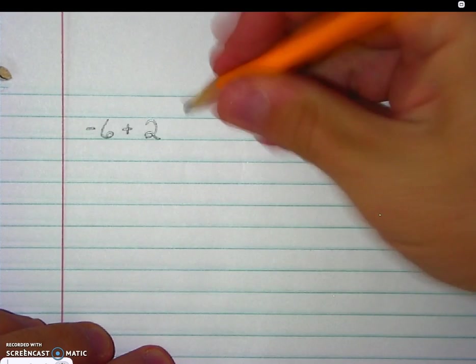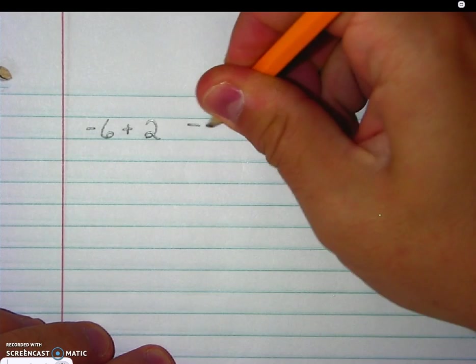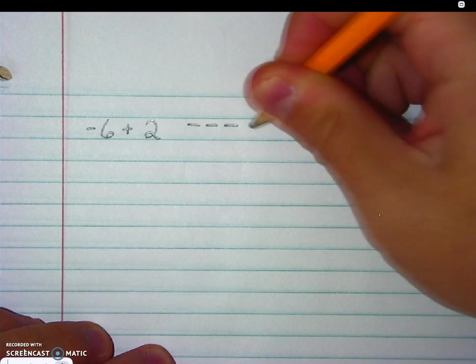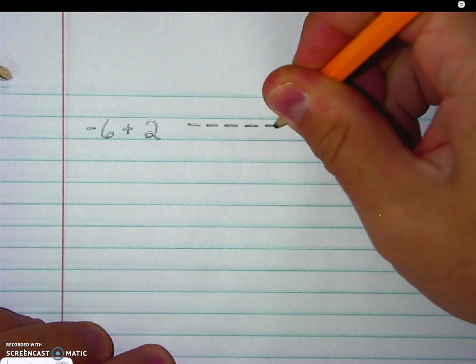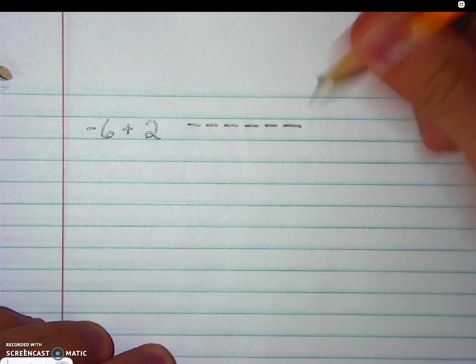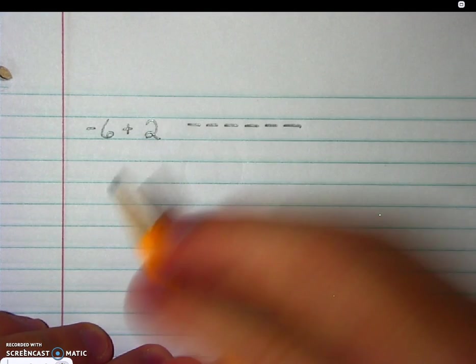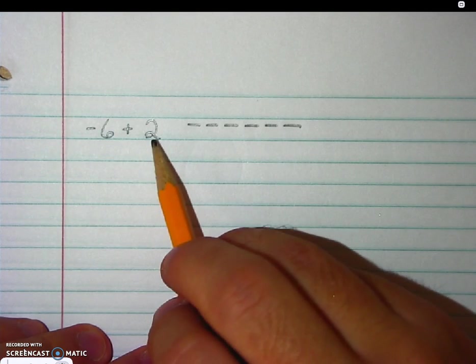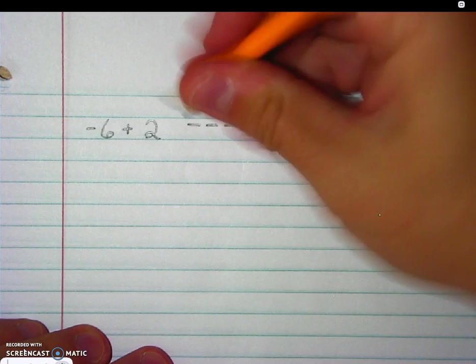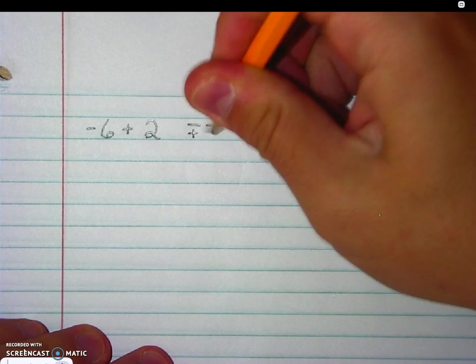I'm going to have six negatives. 1, 2, 3, 4, 5, 6. So six negatives, but I also have two positives. 1, 2.